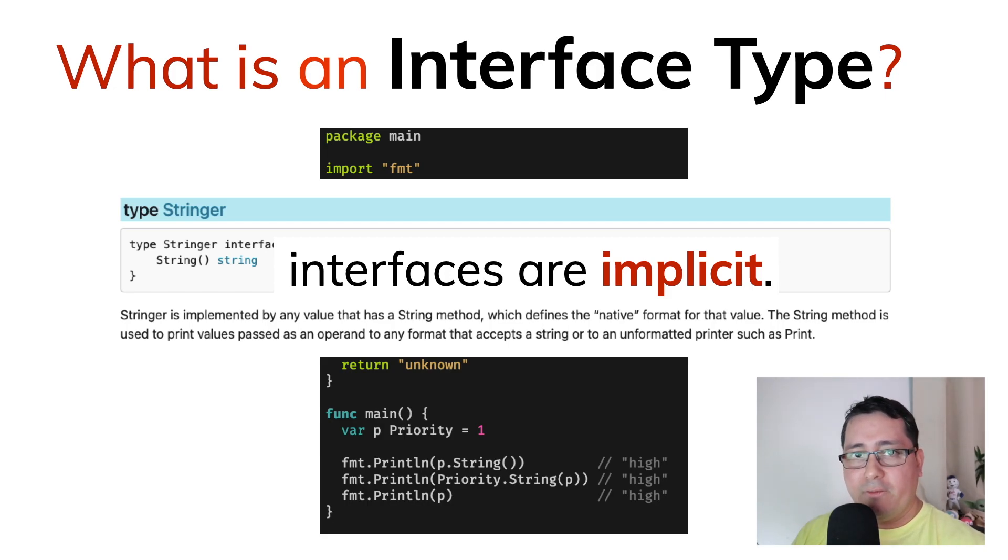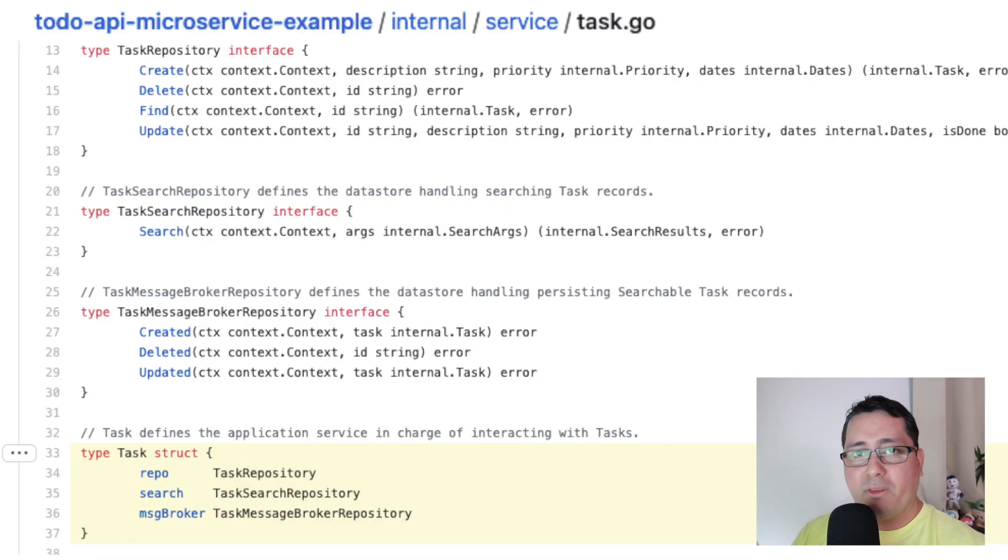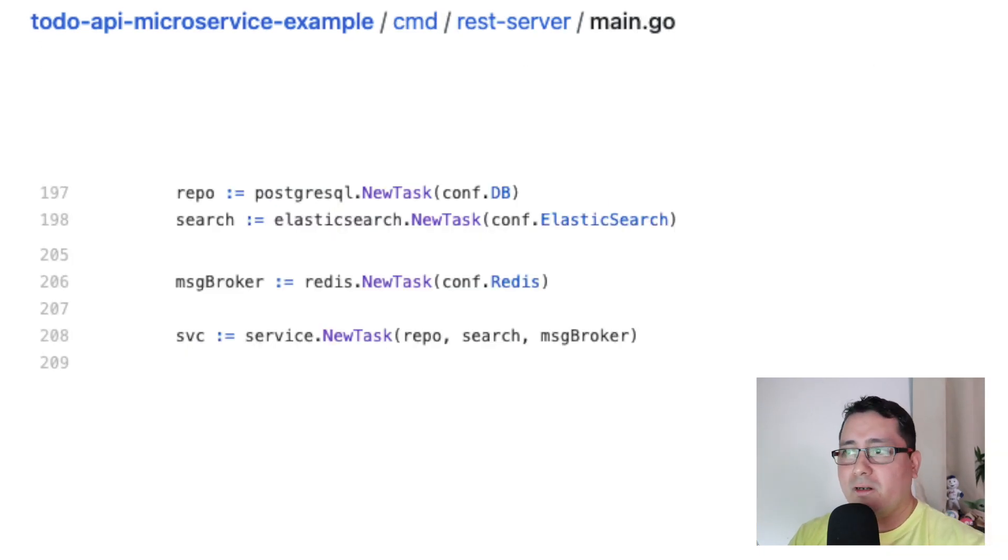And a better example that, again, I will leave in the link in the description, is how we're doing the Tutu microservice. I don't know if you're familiar with that series. When we have the services, the services define some different interface types, like the data stores, for example. And we are referring to the interface type, not the concrete implementation that happens to be, for example, Postgres or the Kafka producer, those kind of things.